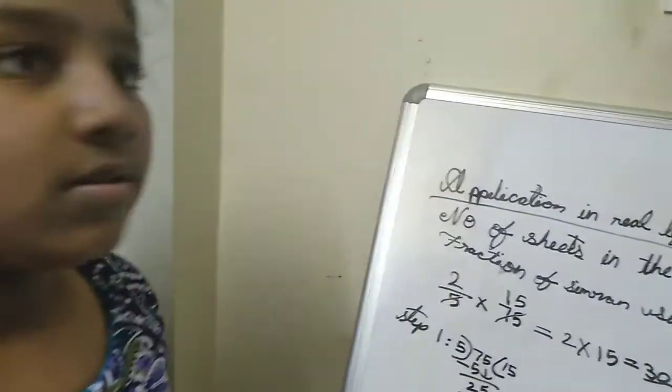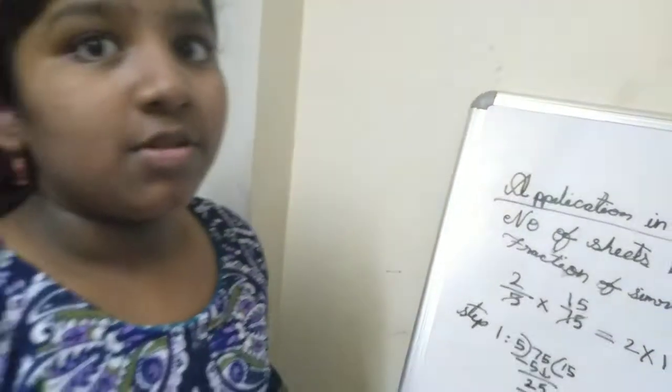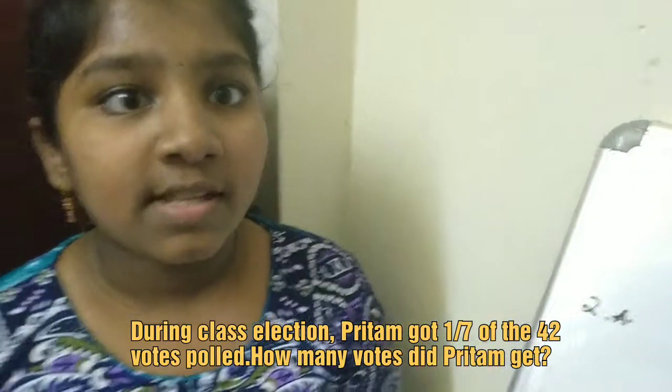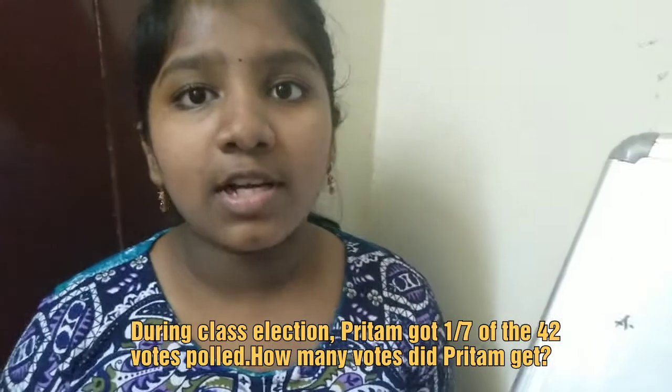Now the second question is: during the class election, Pritham got 1 by 7 of 42 votes polled. How many votes did Pritham get?